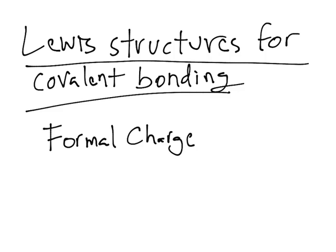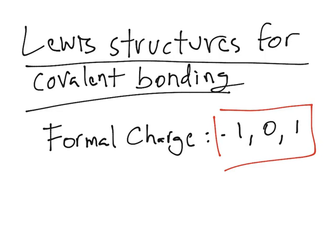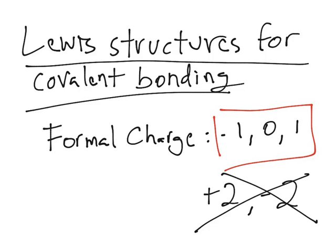The formal charge simply tells you the charge of each of the atoms. The acceptable formal charges are negative one, zero, and one. If you have a plus two or a negative two, that's wrong — same for plus three, negative three, and so on. The formal charge should always be negative one, zero, or one, and zero is the most stable — the one that atom prefers.